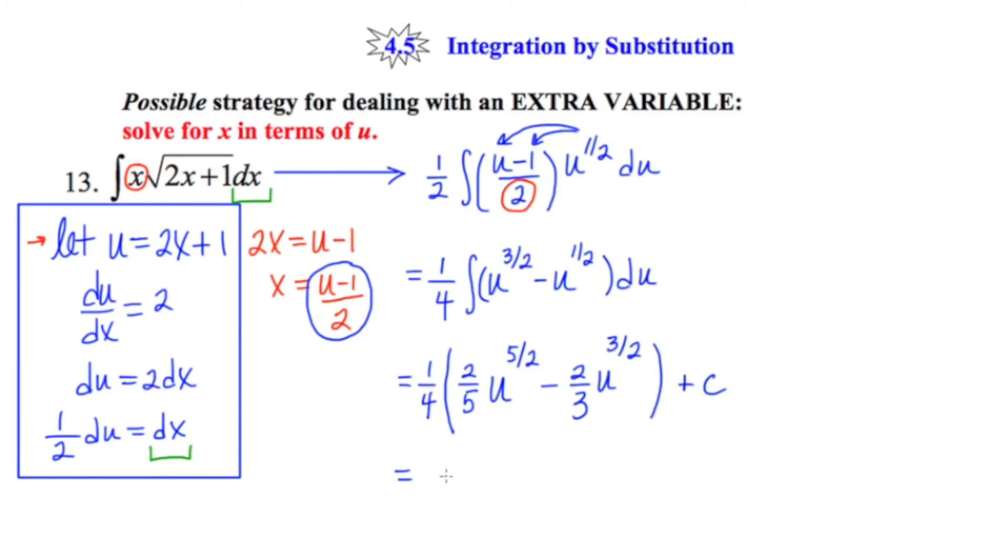Now I'll distribute the 1 fourth through. This gives me 2 20ths or 1 tenth u to the 5 halves. I'll distribute 1 fourth through again, giving me negative 2 twelfths or negative 1 sixth u to the 3 halves. And now I'll finally back substitute in for u.